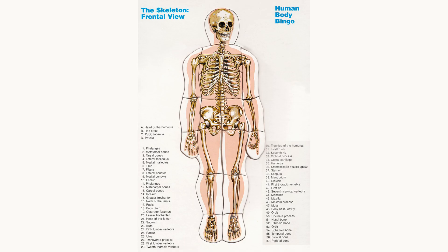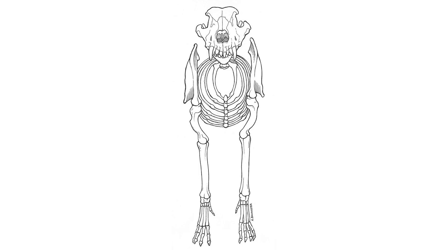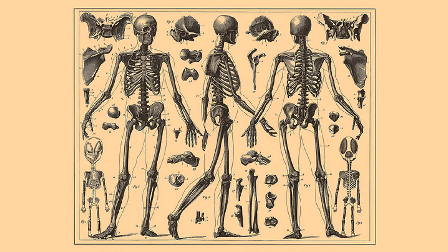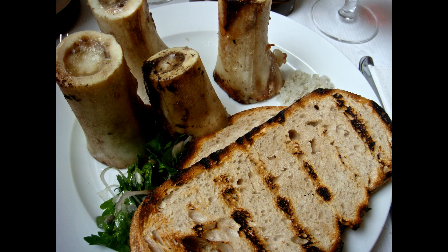Bones perform several essential functions in the human body. Firstly, bones provide support to the body, allowing us to stand upright and maintain our posture. Secondly, bones protect vital organs such as the brain, heart and lungs. Thirdly, bones produce blood cells in the bone marrow, which is found in the centre of some bones.